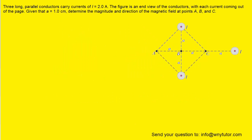If you haven't done so, please pause the video and try to solve the question before listening on. What we want to do first is label the wires with 1, 2, and 3. We can call the top wire 1, the bottom wire 2, and the wire on the right 3.